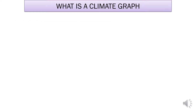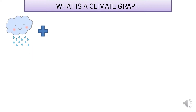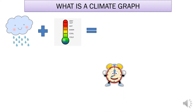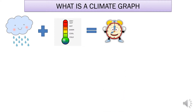We now need to look at what a climate graph shows us, and to do this we're going to remind ourselves of what the word climate means. Climate just means on average how much does it rain and what's the temperature like — hot or cold — over time. It's based on data that's collected over at least 30 years, and this gives us our climate.